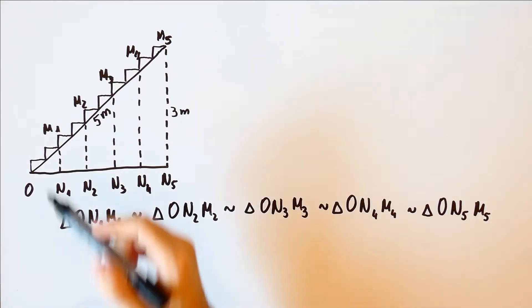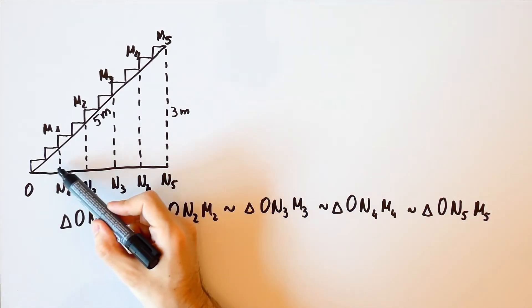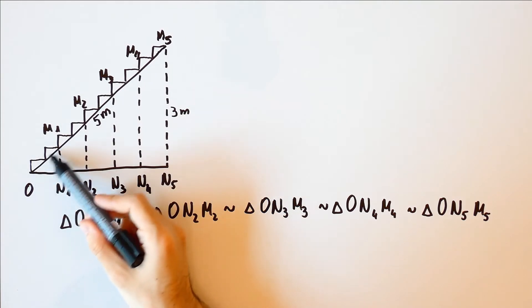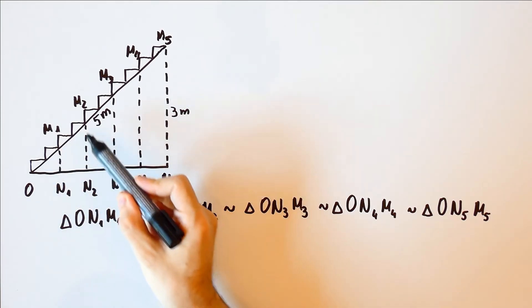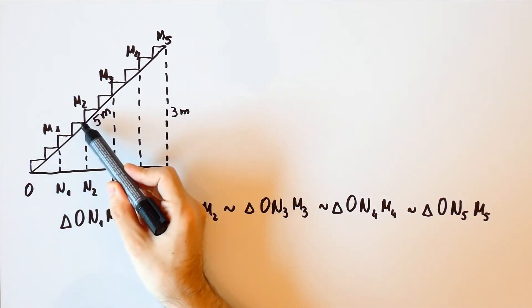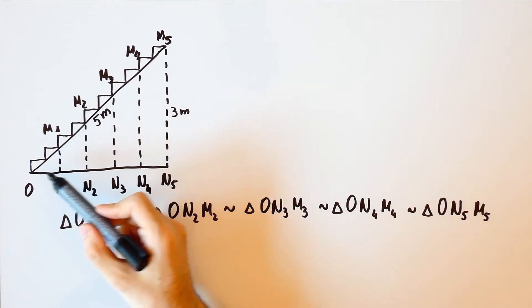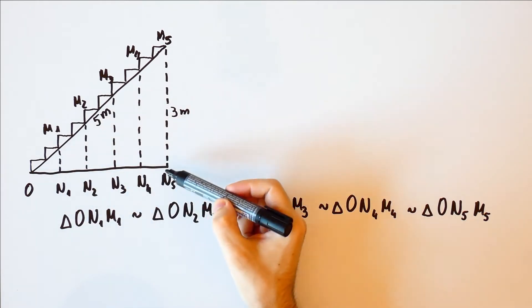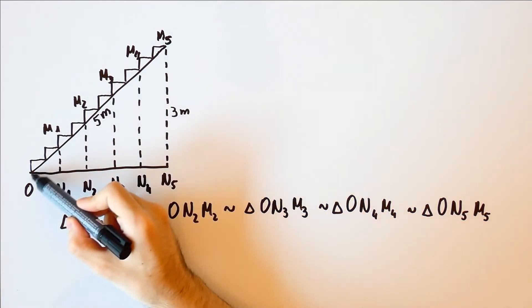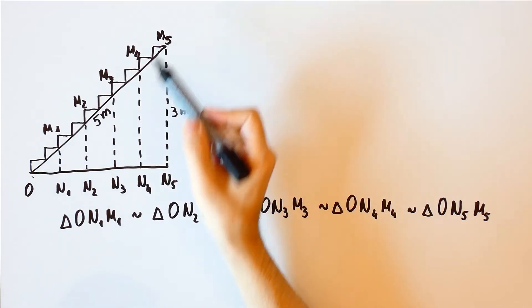But that means that N1-M1 over O-M1 is equal to N2-M2 over O-M2, and that will be equal up to N5-M5 over O-M5.